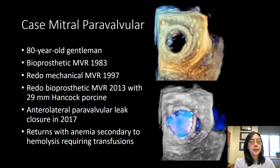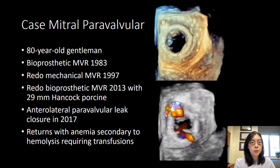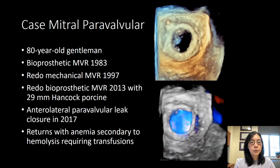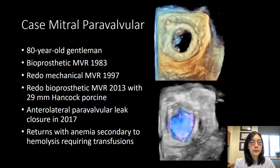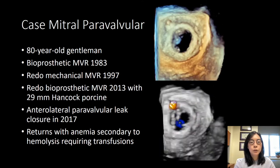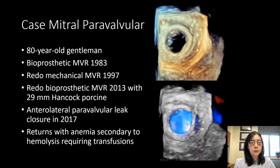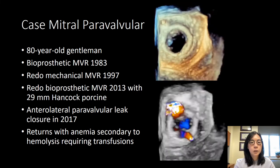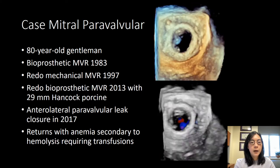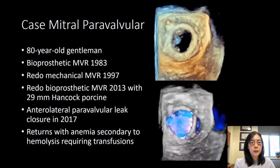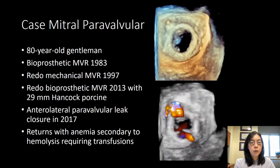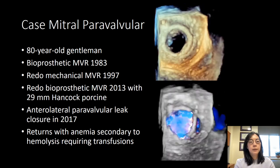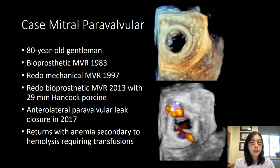This is an 80-year-old gentleman with a bioprosthetic mitral valve replaced in 1983, then a redo of valve surgery in 1997 with a mechanical valve, and then a third redo operation in 2013 with a tissue valve. He was found to have a paravalvular leak due to his multiple surgeries and was not offered another surgical option, so he underwent a percutaneous procedure in 2017. Images at the 11 o'clock position show one device placed, however he still had residual paravalvular leaks — one next to the original device at 11 o'clock and a second smaller leak at about 5 o'clock posteriorly. He returned with anemia caused by hemolysis requiring transfusion, so he underwent another procedure.